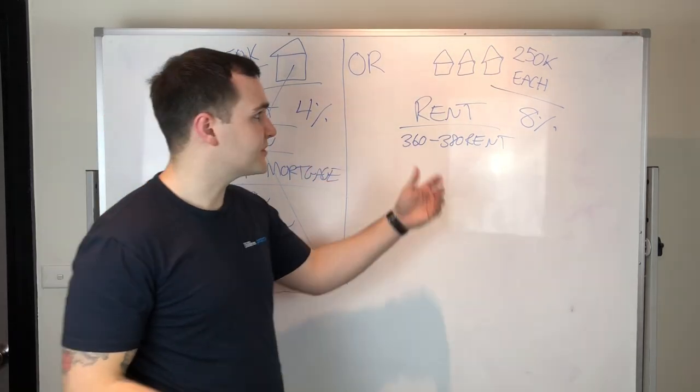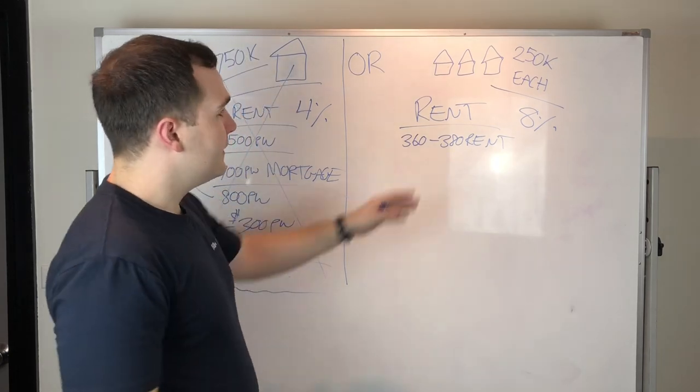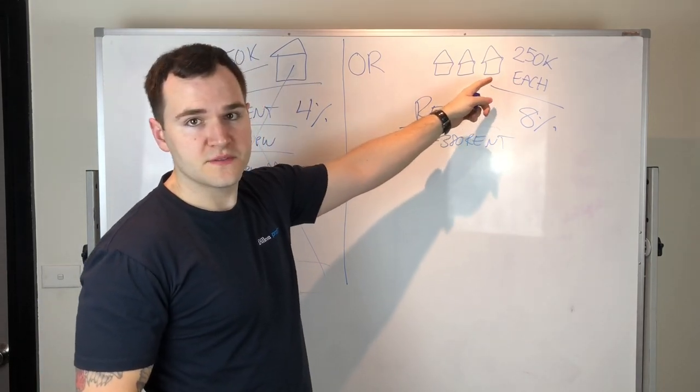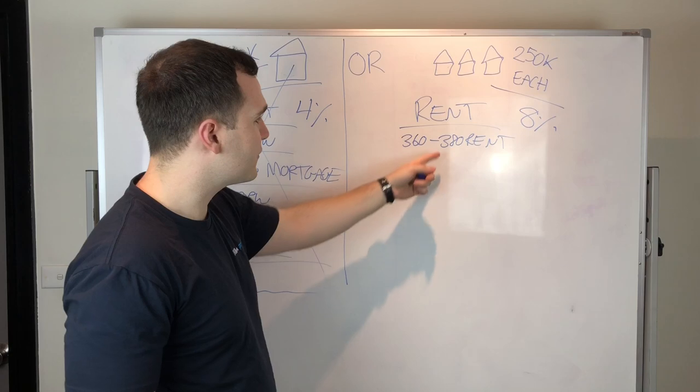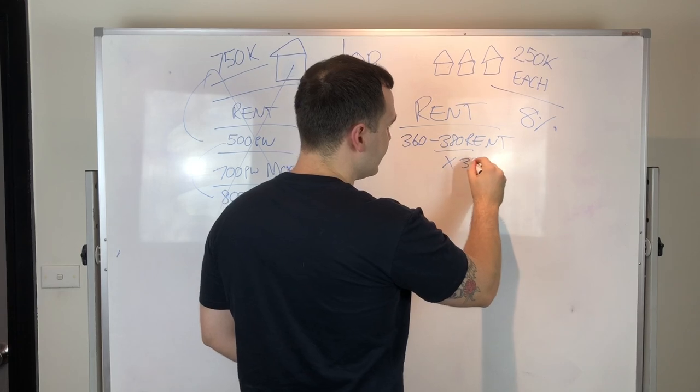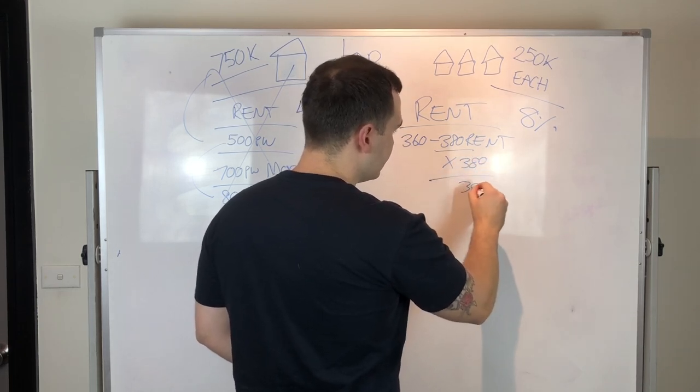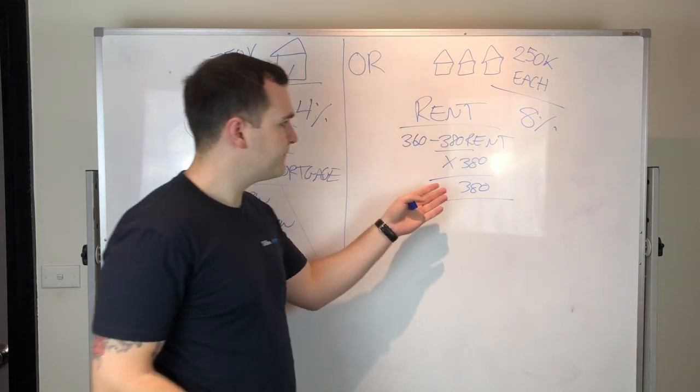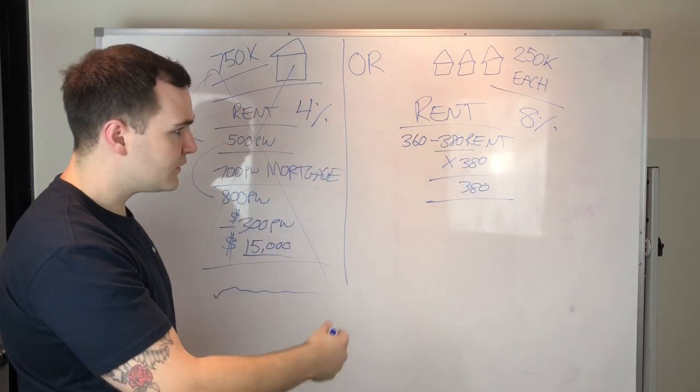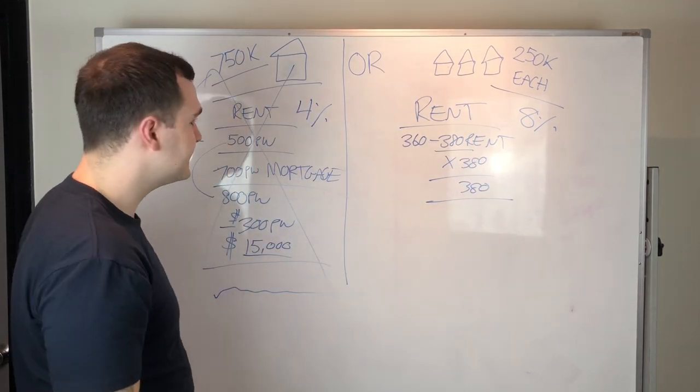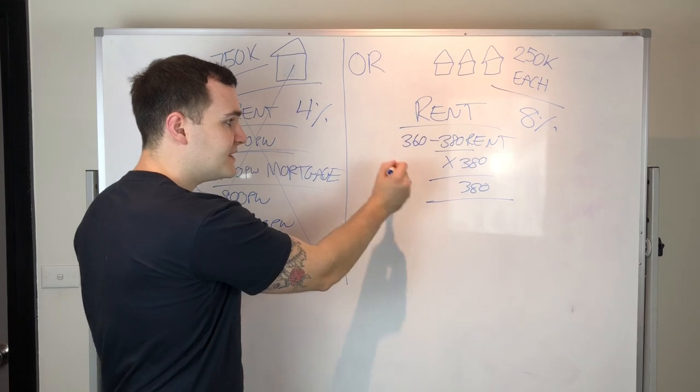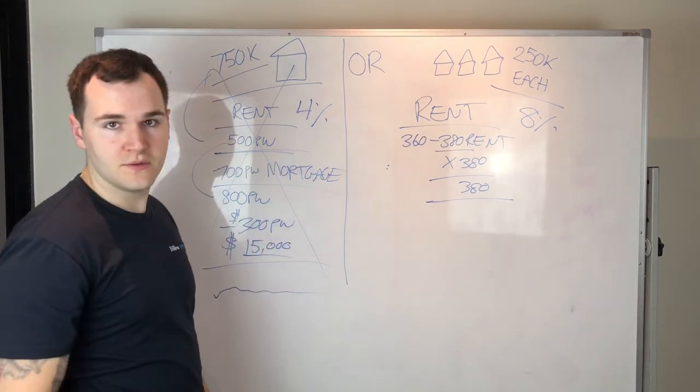So the rent for one thing was enough to actually service it. You're using the same amount of capital. So $750,000 and you bought three of these properties, $250,000 properties for $750,000. The rent, say if you rent out for $380 per week and you've got times three of them, so there's $380 and then another $380, that rental income right there is over $1,000 a week compared to $500 per week in rental income. So the rent on this scenario is double than what it is on this scenario.